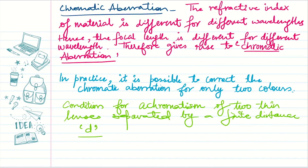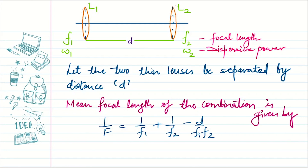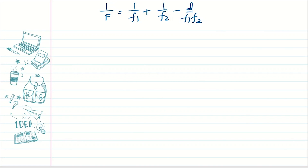Let's find the condition for achromatism for two thin lenses separated by a finite distance d. In the diagram we have two lenses L1 and L2. L1 has focal length f1 and dispersive power ω1; similarly L2 has focal length f2 and dispersive power ω2, and the separation between the two thin lenses is d. We have this formula for mean focal length: 1/F = 1/f1 + 1/f2 - d/(f1·f2), where F is the mean focal length.